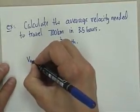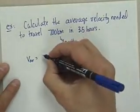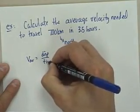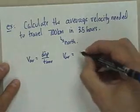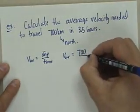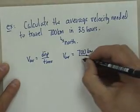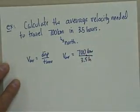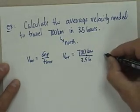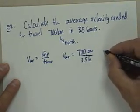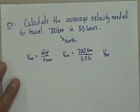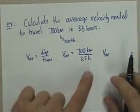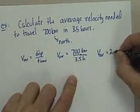So our average velocity for that entire trip is going to be our displacement over our time. So your average velocity is going to be 700 kilometers over 3.5 hours. So that should be 700 divided by 3.5. That's going to be 200.